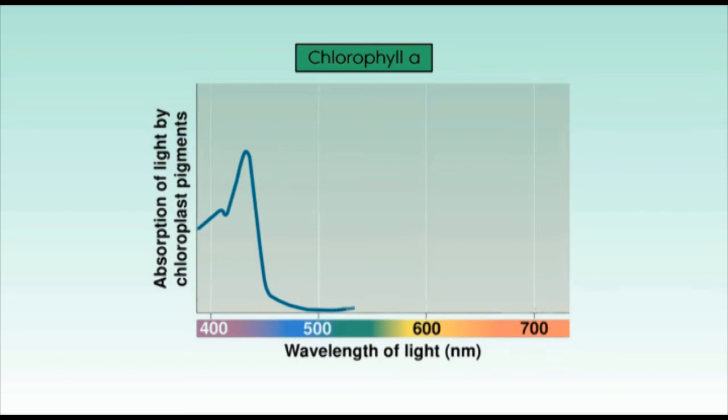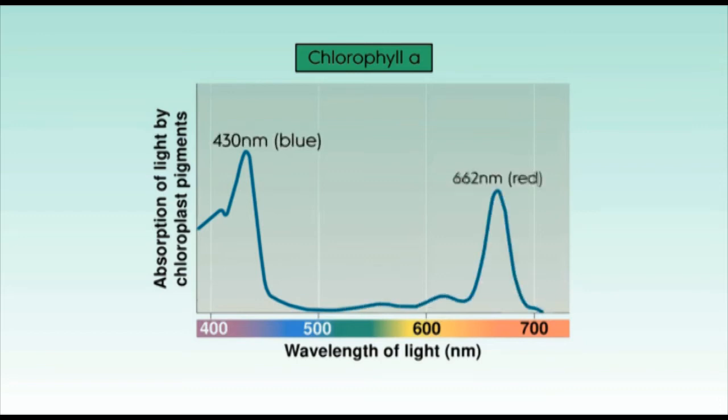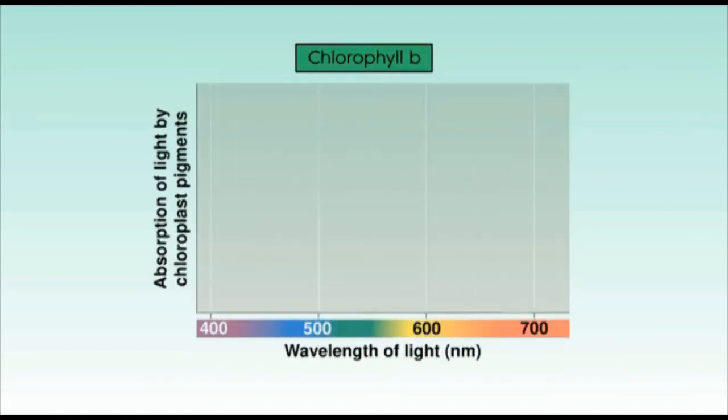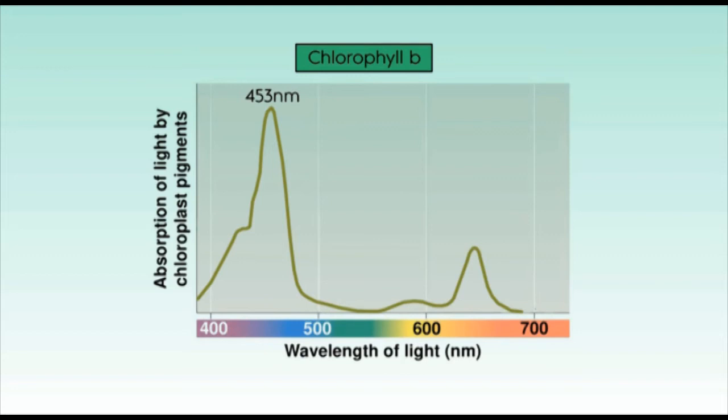Chlorophyll A absorbs light with wavelengths of 430 nm in the blue range and 662 nm in the red range, whereas chlorophyll B absorbs light of 453 nm and 642 nm maximally. The chlorophylls of the purple and green bacteria, called bacteriochlorophylls, are chemically different from chlorophyll A in their substituent side chains, which is reflected in their light absorption spectra. Bacteriochlorophylls absorb from 800 to 1000 nm in the far red region of the spectrum.